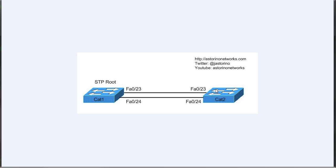The spanning tree algorithm works as follows. The first thing we do is elect a root bridge. The root bridge is selected by the lowest bridge ID, and the bridge ID is made up of a switch priority and then a MAC address. The default switch priority is 32,768 — if you don't change it, that's what you get, and it really comes down to lowest MAC address.